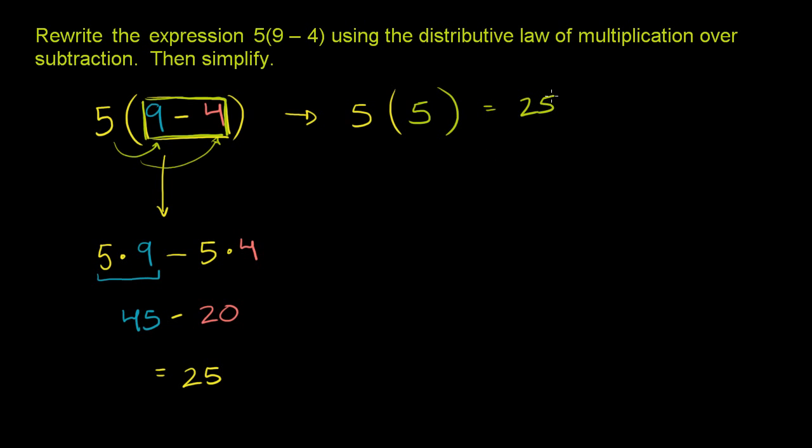So we get the same answer either way. This is using the distributive law of multiplication over subtraction, usually just referred to as the distributive property. This is evaluating the inside of the parentheses first, and then multiplying by 5.